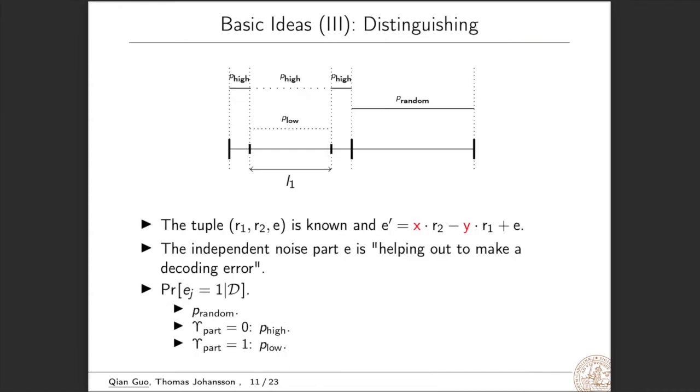We next show how to distinguish these two types of intervals. The first type of interval, including many ones, we call it case 1 interval. An interval without such a chunk are called case 2 interval. The tuple r1, r2, e is known and the error e prime is of this form. The main observation is that the independent noise part e is helping out to make a decoding error. We consider the probability that the j-th position of e to be 1 conditioned on that decryption failure occurs.